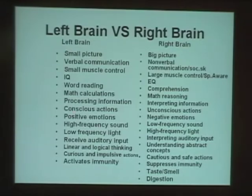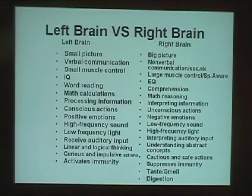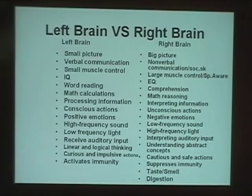High frequency sound and low frequency light — basically TV and computer games — are left brain stimulants. If a child has a right brain weakness and a strong left brain, and they're in front of a computer or video game for a long time, they're only increasing their imbalance. That's why parents say, 'They can't sit still in school but will sit in front of a video game for hours' — it's stimulating an already strong left brain.